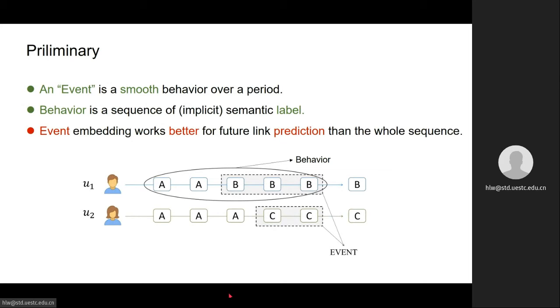As mentioned before, not all historical information are useful for predicting future actions or inferring the current semantic labels. So we propose to use event instead of all historical information for these downstream tasks. In this paper, an event is defined as a smooth behavior over a period of time, and behavior is defined as a sequence of semantic labels.